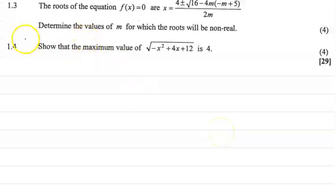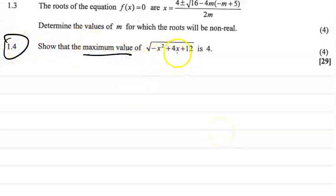Let's go look at that question, which is 1.4: show that the maximum value of the square root of minus x squared plus 4x plus 12 is 4.